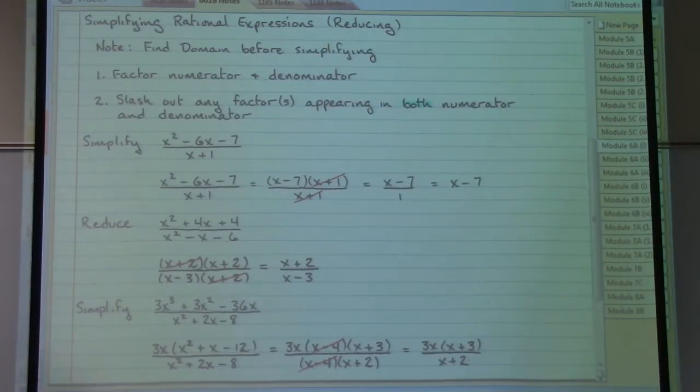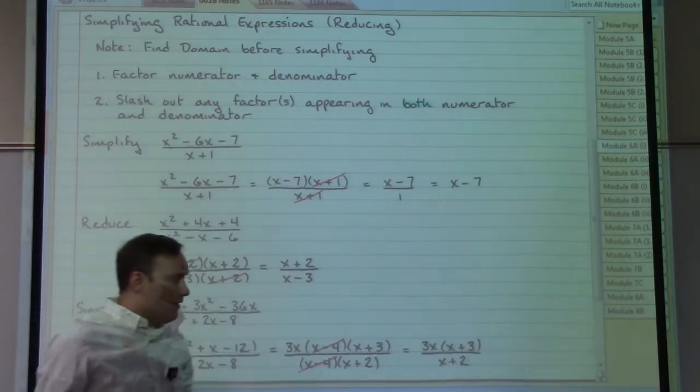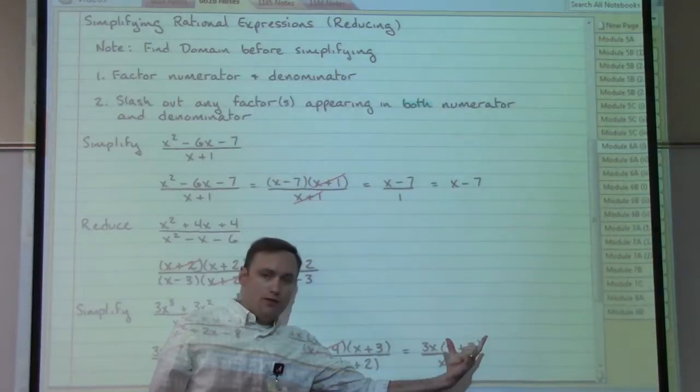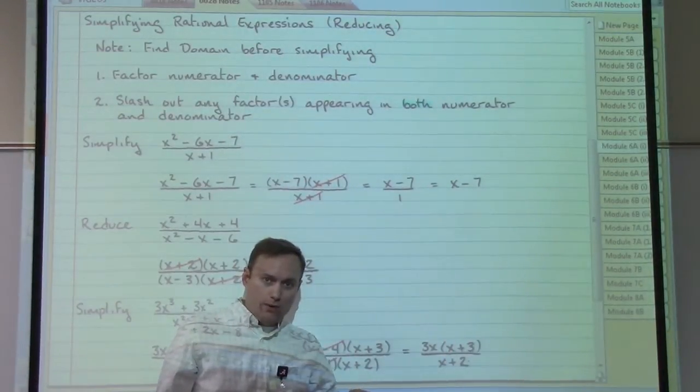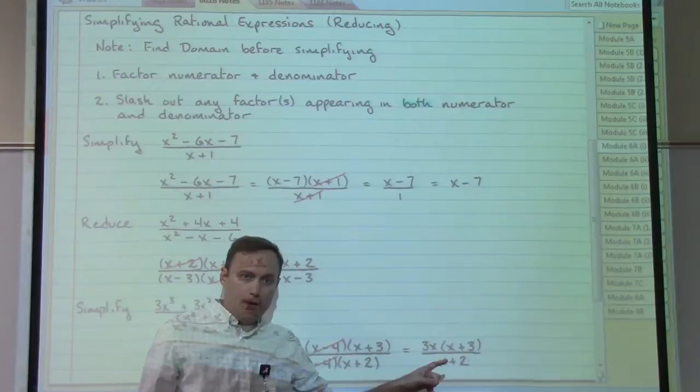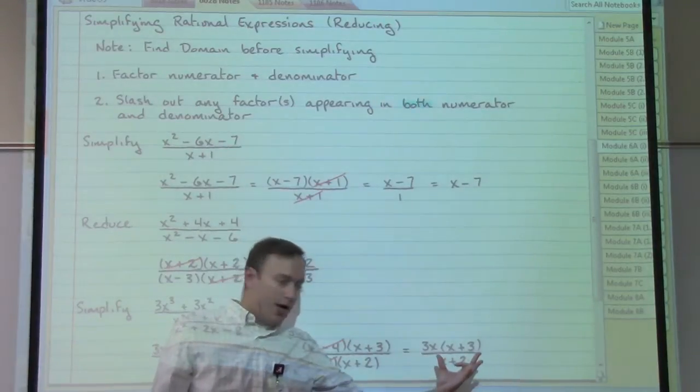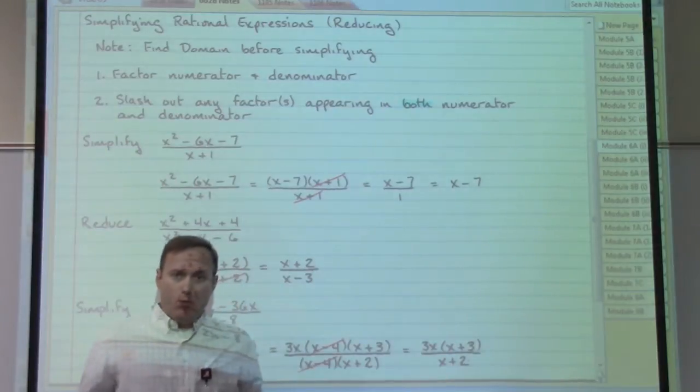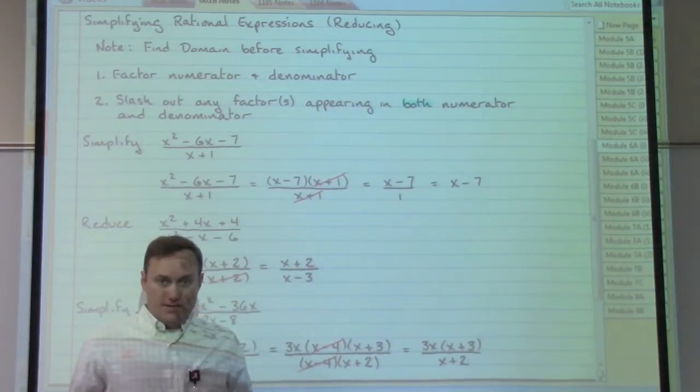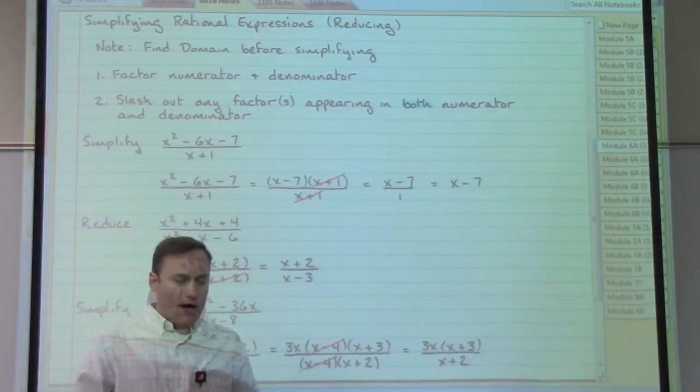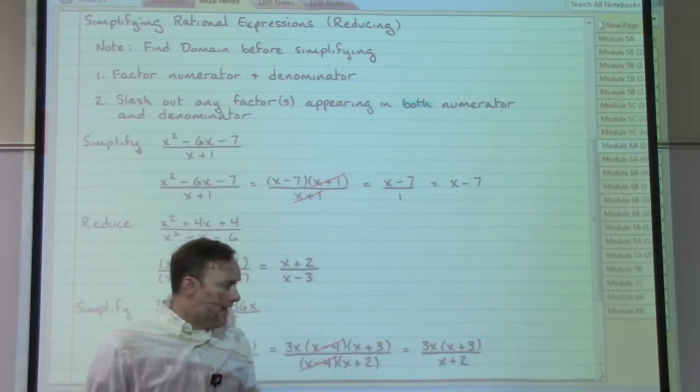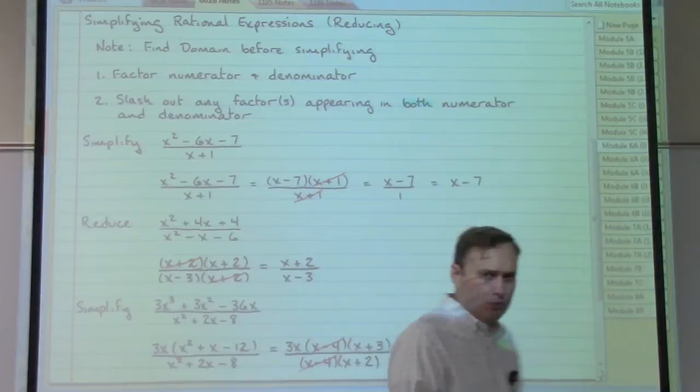Again, no more common factors that appear. The top has a factor of 3x. The top has a factor of x plus 3. Neither of those, by themselves, show up on the bottom as a factor. The bottom only has a single factor of x plus 2. So nothing more that is common as a factor to both the top and the bottom. Nothing more that we can slash out. And this would be our reduced answer here for this particular problem.